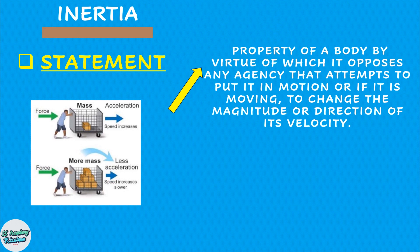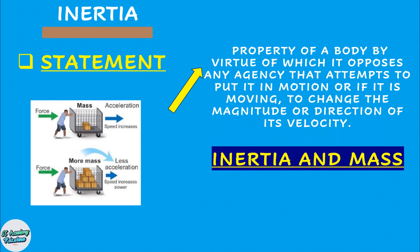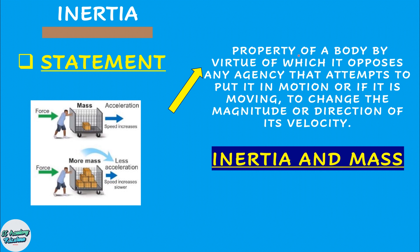Here I will emphasize another property, inertia, and how it is related with mass. Inertia is a property of a body by virtue of which it opposes any agency that attempts to put it in motion, or if it is moving, to change the magnitude or direction of its velocity. Lighter masses have less inertia and more massive bodies have more inertia. This is the reason that lighter masses are accelerated more and heavier bodies are accelerated less if we use the same applied force as shown in this diagram.